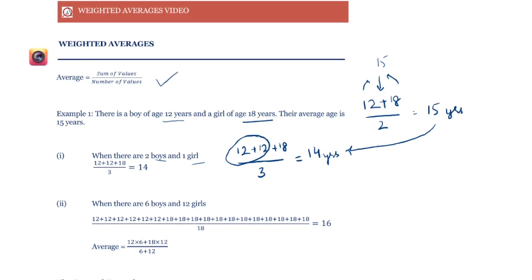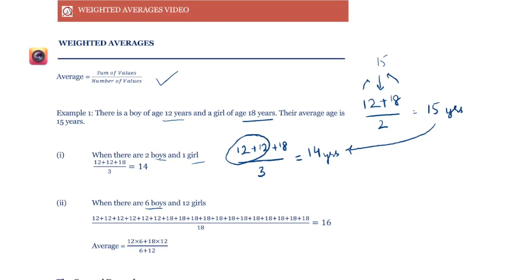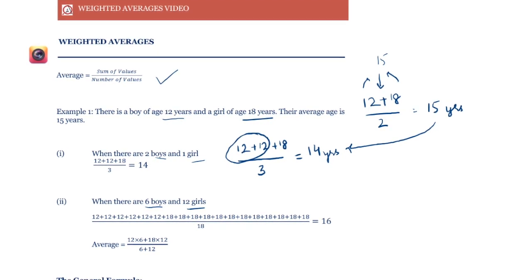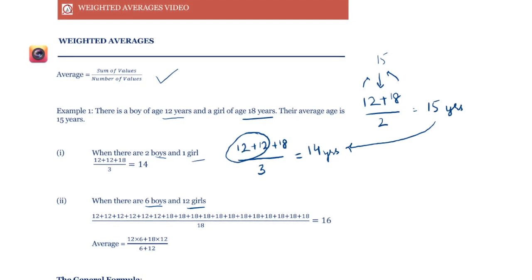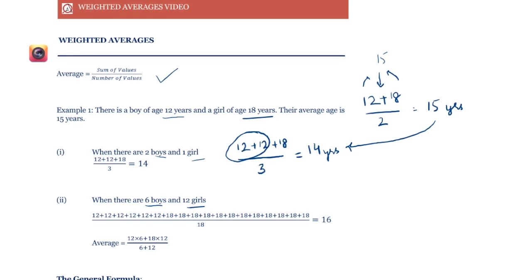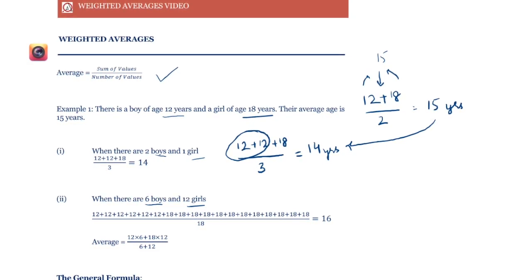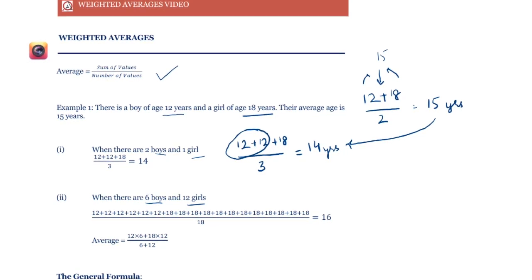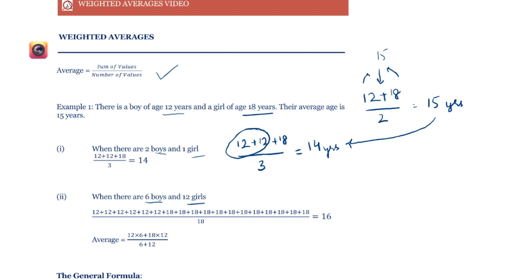What if we had six boys and twelve girls? Now we have many more girls than boys. We would calculate the average by adding 12 six times and adding 18 twelve times, then dividing by the total number of kids, which is 18.